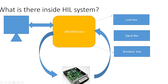Inside the HIL system at a higher level, it has a load box that provides flexibility to simulate different kinds of hardware like sensors and actuators. It also has a signal box that can generate different signals, and a breakout box to perform manual tests — such as open circuit, shorting a signal to ground, or shorting a sensor signal to battery voltage. This system provides the vehicle environment to test the ECU.